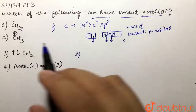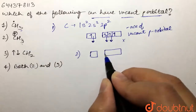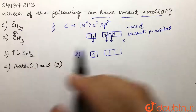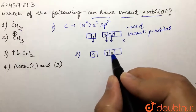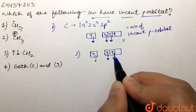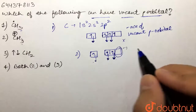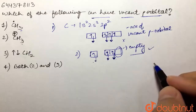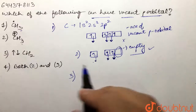In the second case, we have CH3 positive. Again considering the excited state of carbon, in this case one electron is lost from carbon. So we have only three electrons present, making three bonds with hydrogen. Therefore we have an empty p orbital here, so this is the correct option.